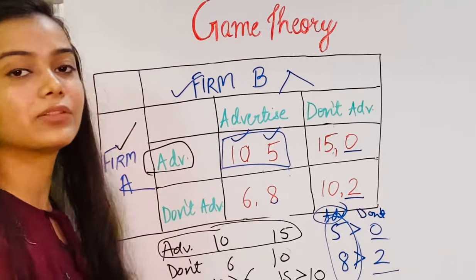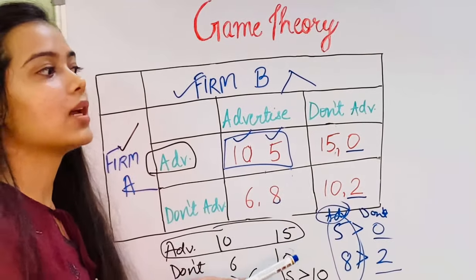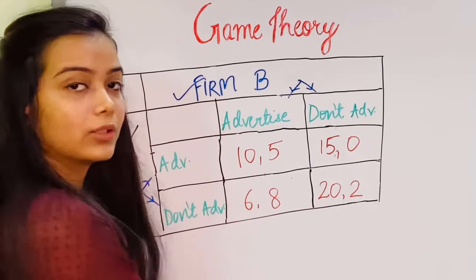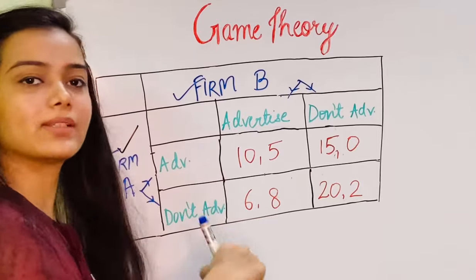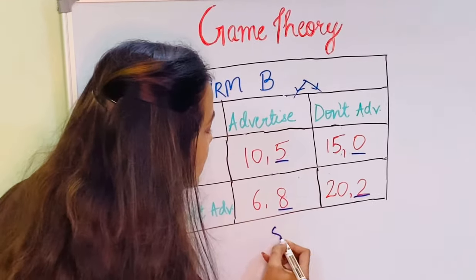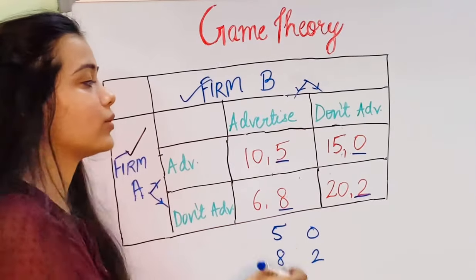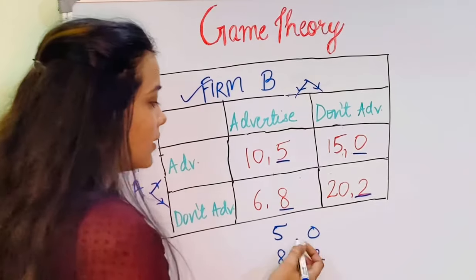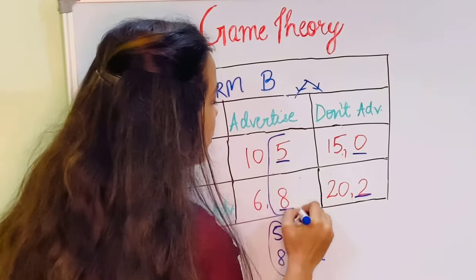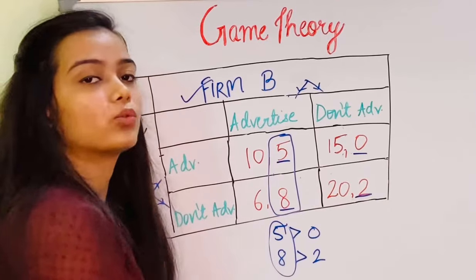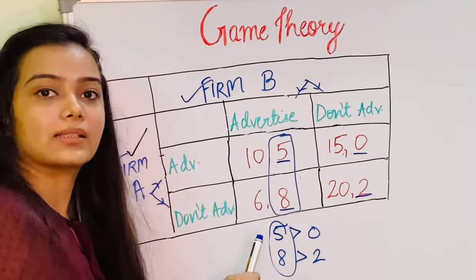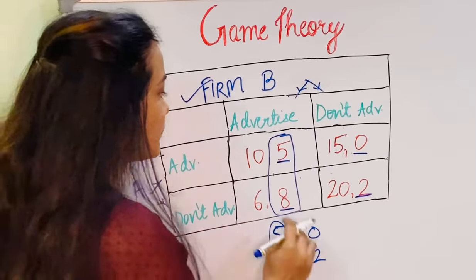Not all games have dominant strategies for each player. Let's consider a slightly different example where we have changed just one value — we write 20 instead of 10 in the previous example. Firm B's payoffs remain the same: 5, 0, 8, and 2. Since 5 is greater than 0 and 8 is greater than 2, Firm B still has a dominant strategy in advertising — whatever Firm A does, Firm B will always choose to advertise.